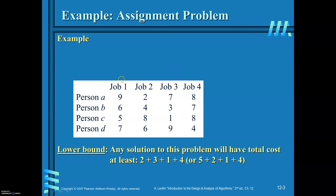First, you are required to find out the lower bound. For this problem, the best possible lower bound is computed by taking the minimum value from each row: 2, 3, 1, 4, giving a total of 10. For example, person A can be assigned job 1 at cost 9, job 2 at cost 2, job 3 at cost 7, or job 4 at cost 8 — the minimum possible value is 2. The total cost for this assignment problem cannot be less than this lower bound of 10.